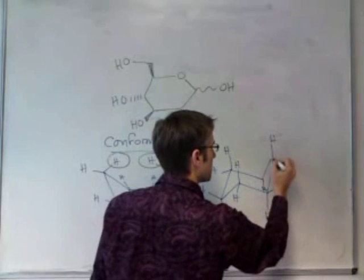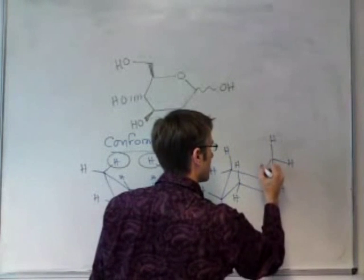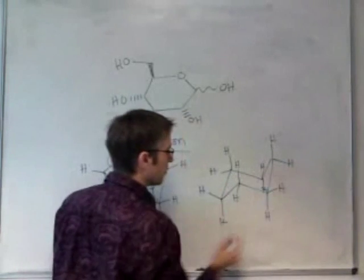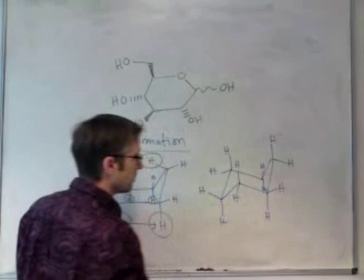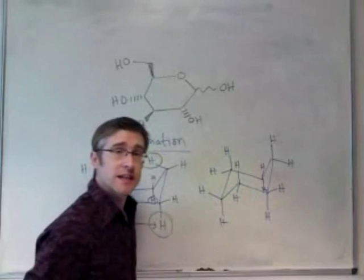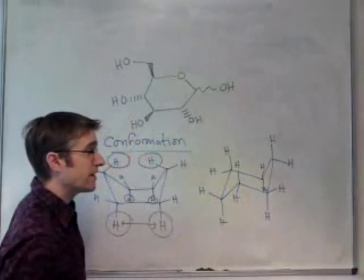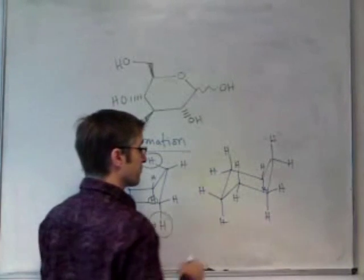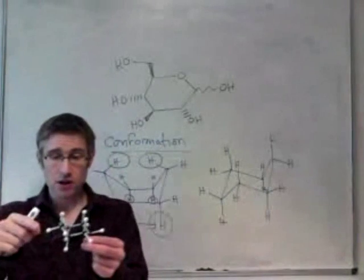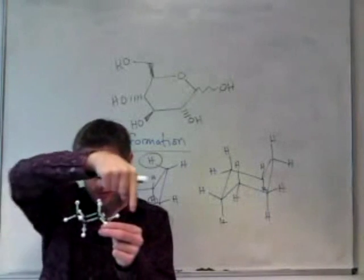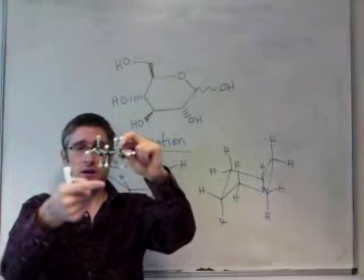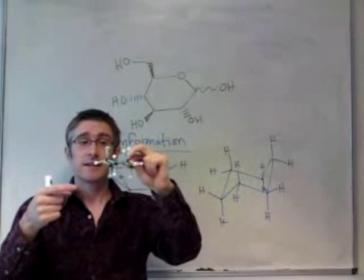We then show the equatorial hydrogens on that structure. What I want you to notice is that this hydrogen is parallel to this bond, this hydrogen is parallel to this bond, this hydrogen is parallel to this bond. There's always a parallel set of bonds so you can work out where the equatorial hydrogens are. These equatorial hydrogens are the ones around the rim of the ring, and the axial hydrogens are the ones pointing up and the ones pointing down.